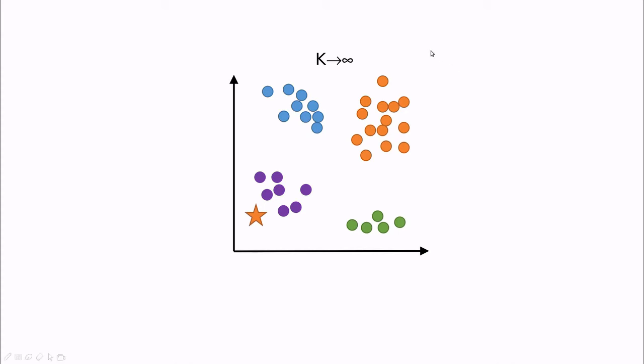So as you can see, taking k equals 1 is very noisy because we're going to take all into account, like in this case, all into account the closest one. And if k equals infinity, we're going to take all of them.